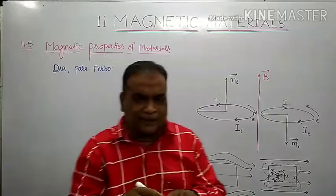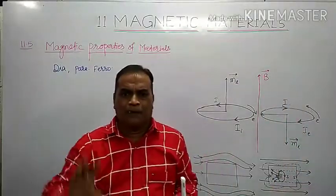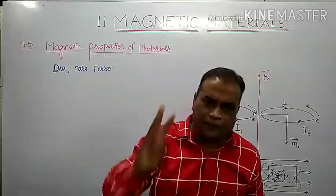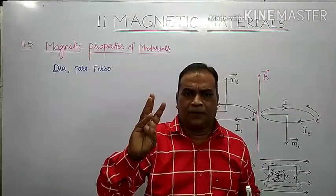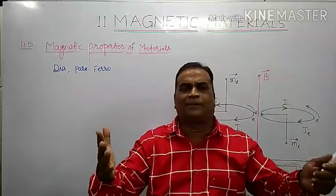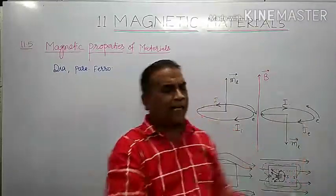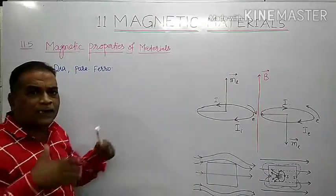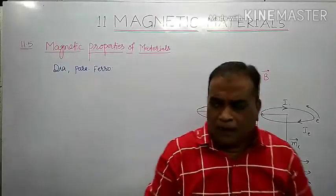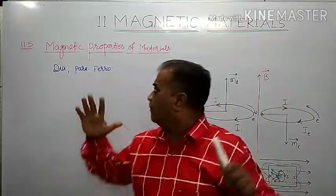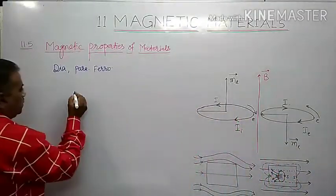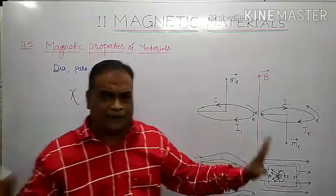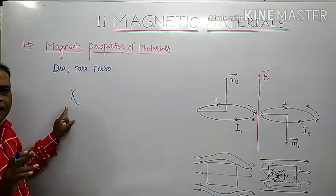Magnetic materials are classified into three categories: diamagnetic material, paramagnetic material, and ferromagnetic material. This classification depends on how these magnetic materials behave whenever they are kept in an external magnetic field. One of the important magnetic properties is known as magnetic susceptibility, and it is denoted by the letter Chi (χ).